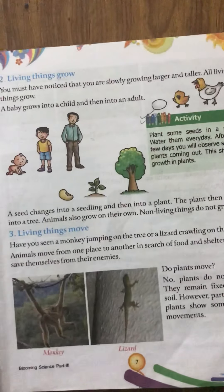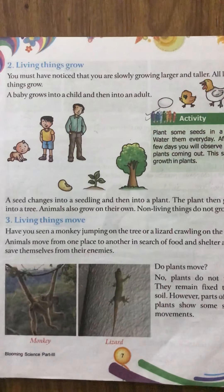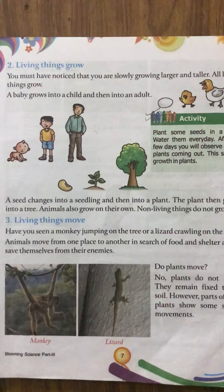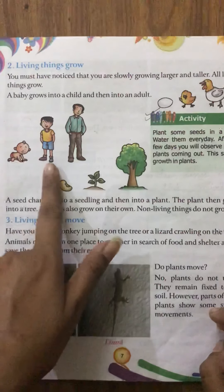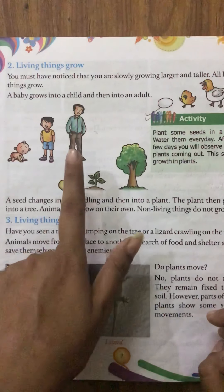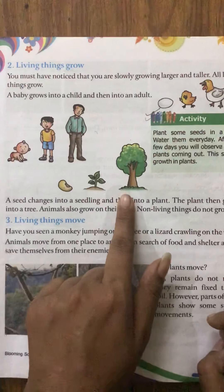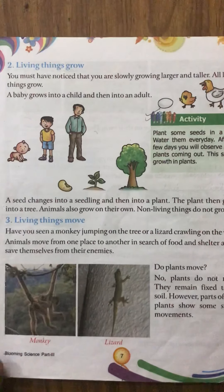Second point: living things grow. You must have noticed that you are slowly growing larger and taller. All living things grow — a baby grows into a child and then into an adult. A seed changes into a seedling and then into a plant, and the plant grows into a tree. Animals also grow on their own. Non-living things do not grow.